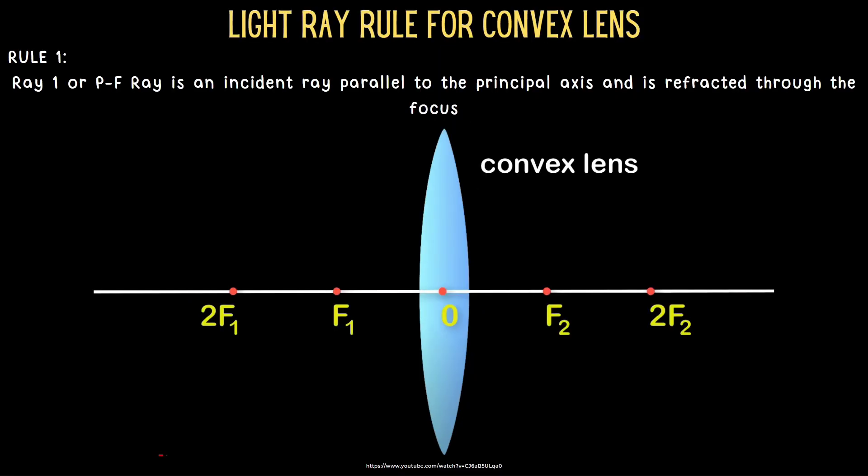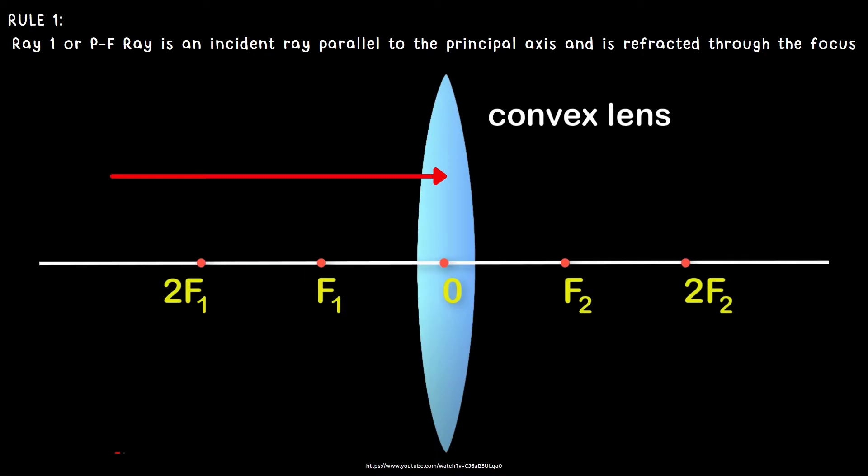Light ray rule for convex lens. Rule 1: Ray 1, or the PF ray. The P represents the principal axis and F is the focus. There is an incident ray parallel to the principal axis and is refracted through the focus.